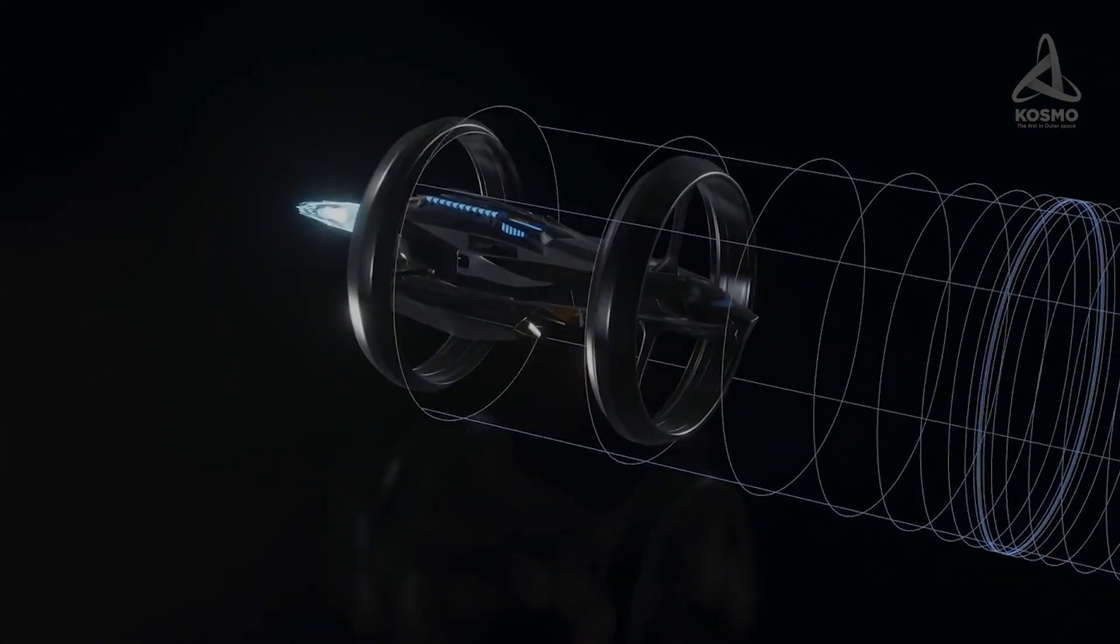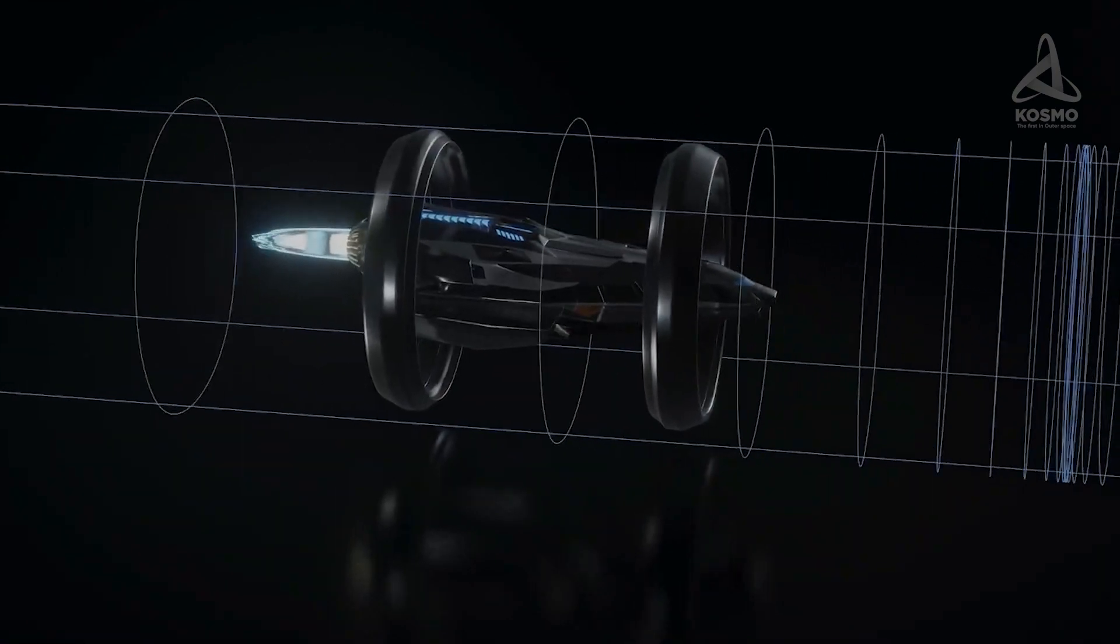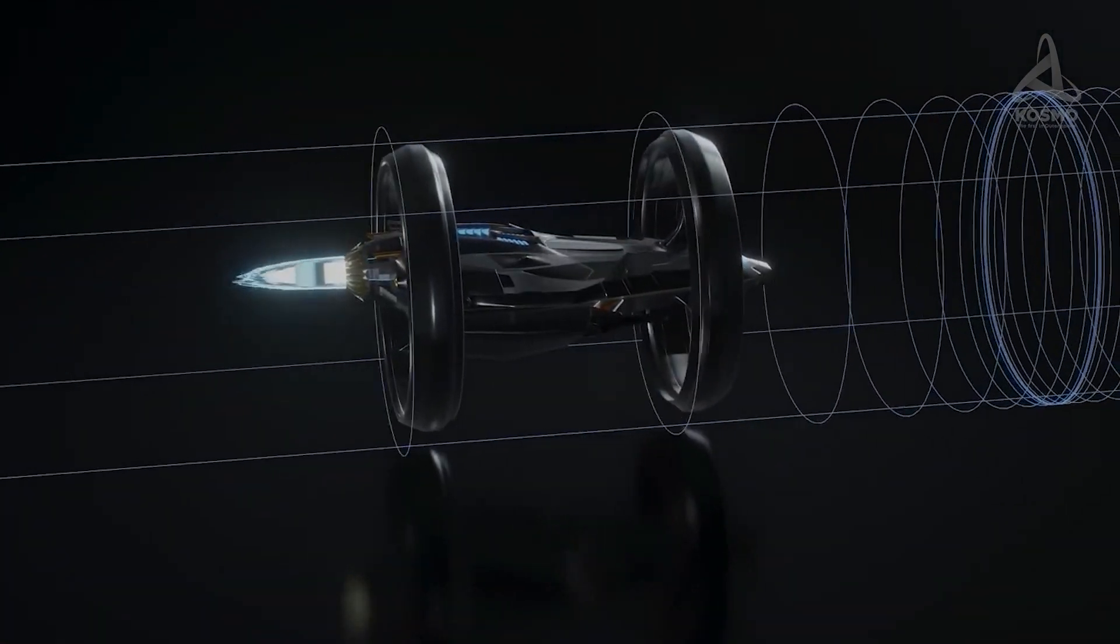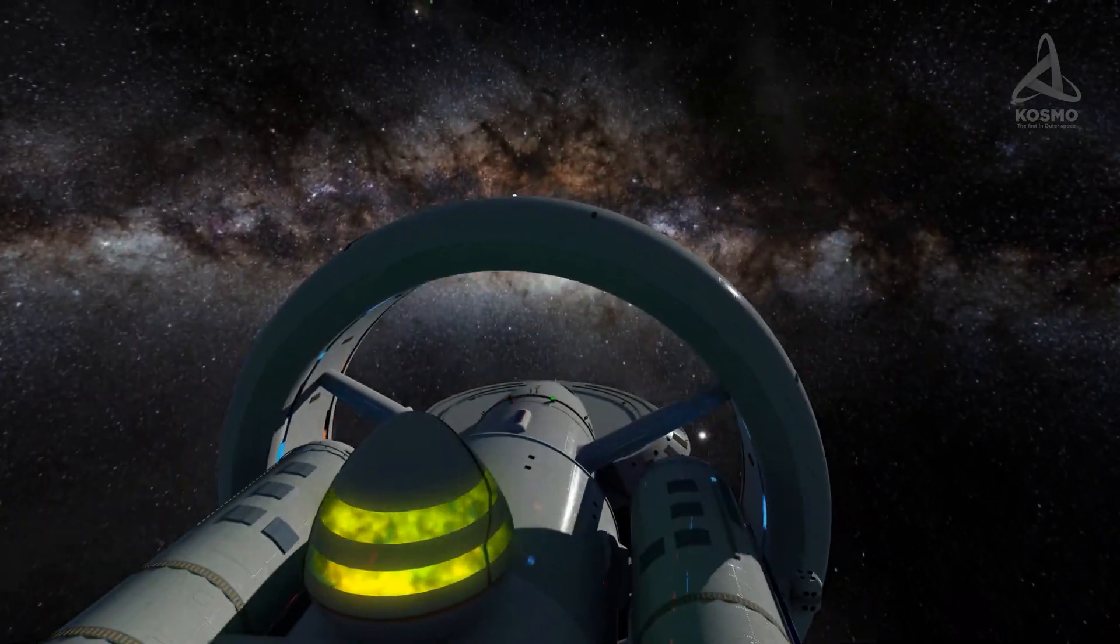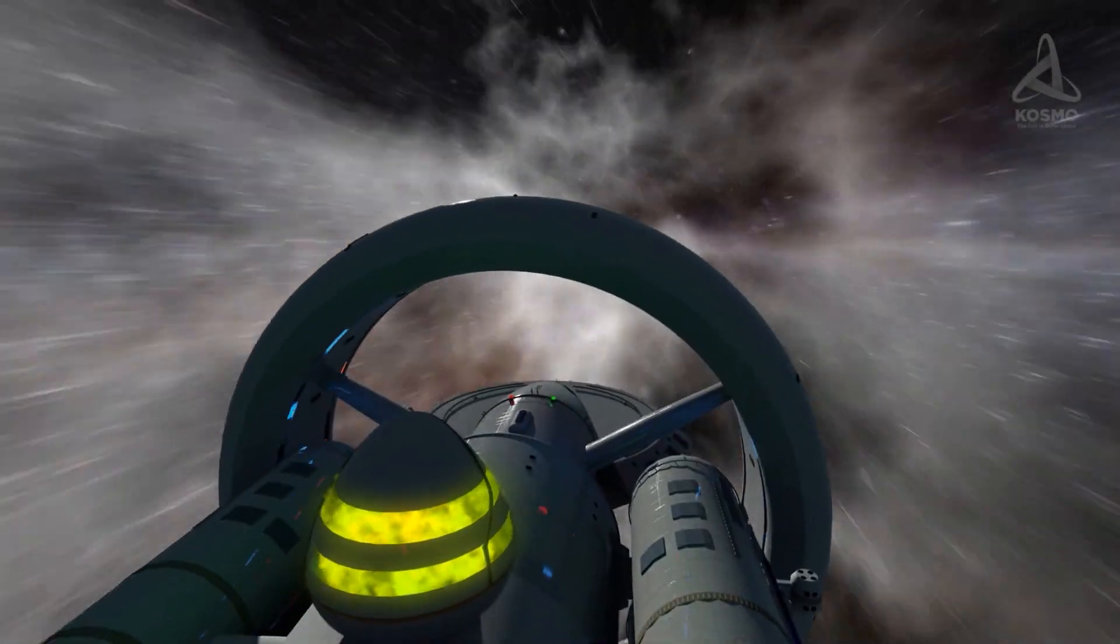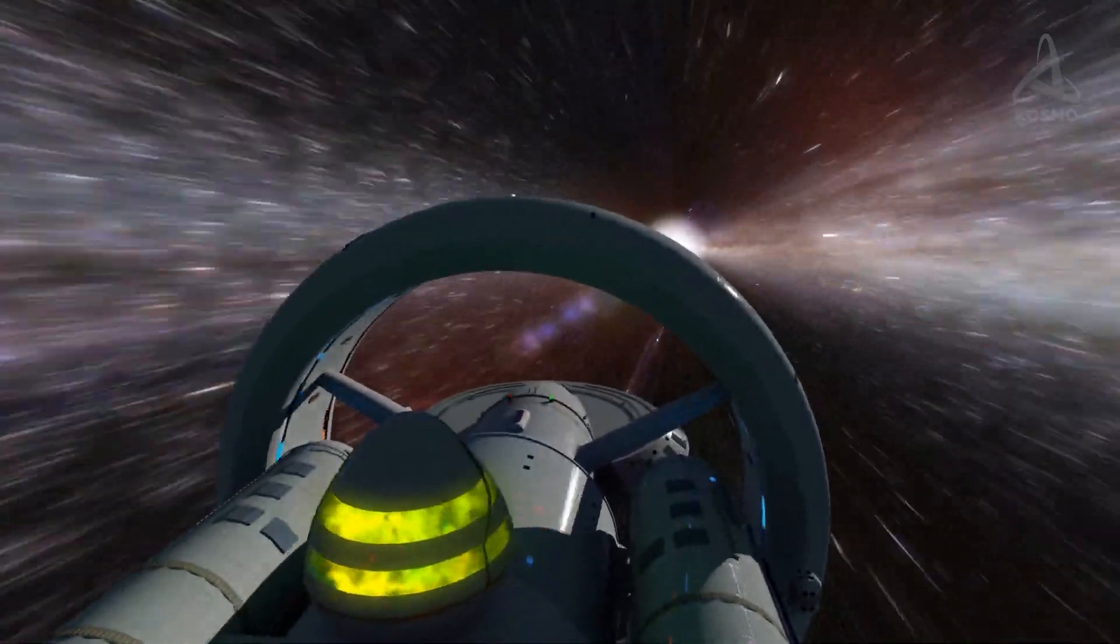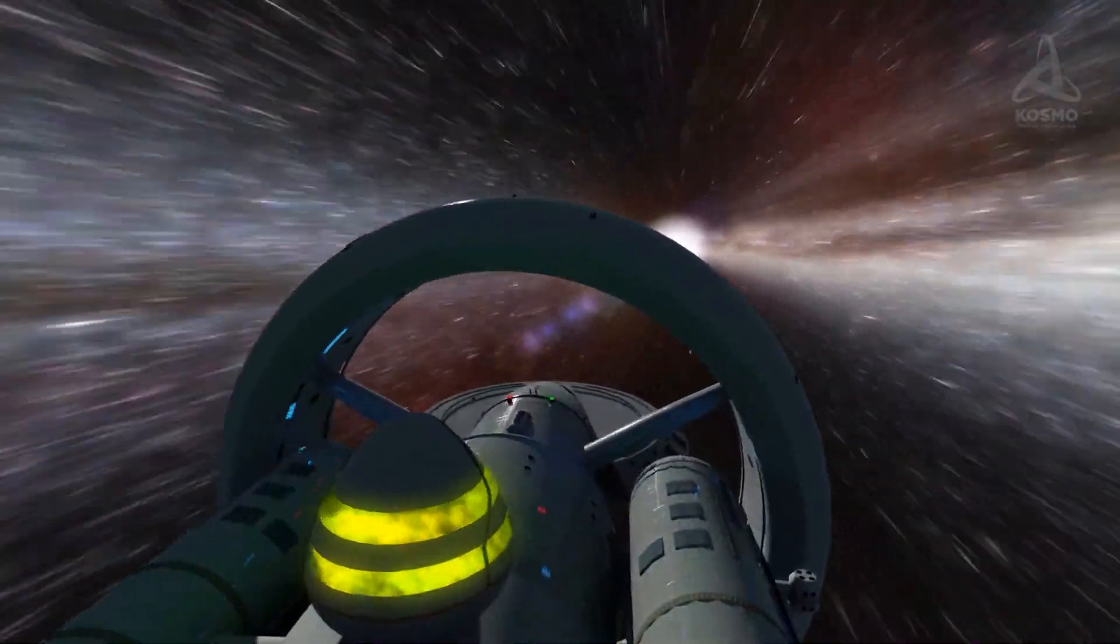The warp drive inside it makes the space in front of the bubble contract and the space behind the bubble expand, with the spacecraft in between remaining motionless. Thus, the bubble is able to travel together with the spaceship at an unlimited speed which beats even the speed of light.